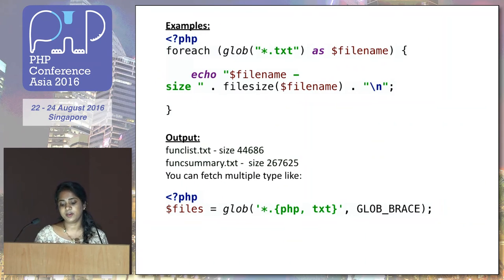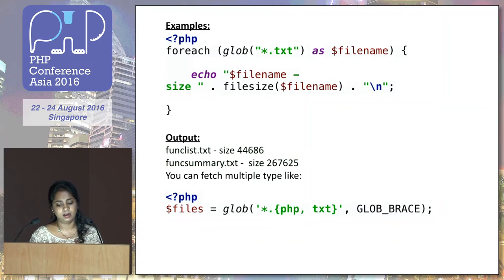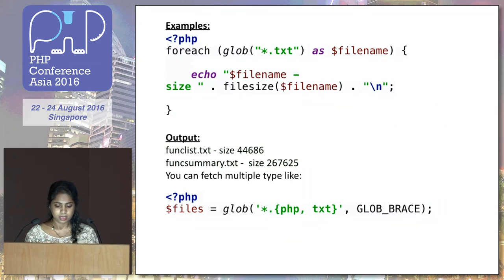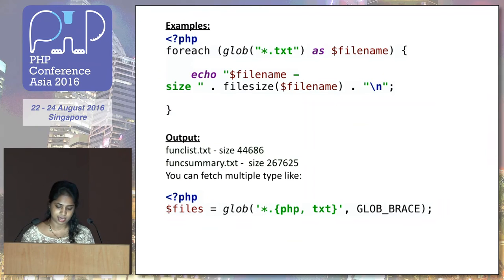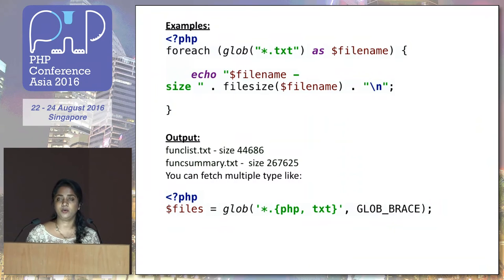Here's a simple example which retrieves all the files matching a particular pattern. It will list the file names and the file size. Glob can also take multiple patterns. I've demonstrated another example that takes multiple files — this is the case where you might have to use a flag. GLOB_BRACE is a flag which expands the braces to search for two patterns.